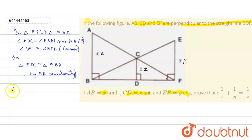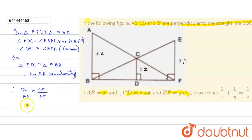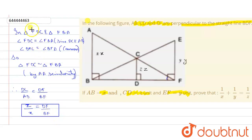Therefore, DC upon AB equals DF upon BF. We have DC as z and AB as x, so we can write z upon x equals DF upon BF. Let this be equation one.